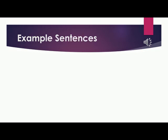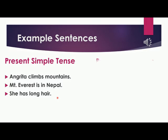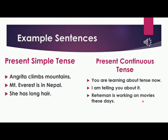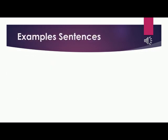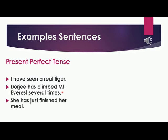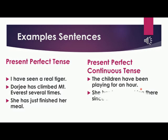We just learnt the names of all the tenses. Now, let's go to example sentences. Present simple tense: Angrita climbs mountain. Mount Everest is in Nepal. She has long hair. Present continuous tense: You are learning about tense now. I am telling you about it. Rahman is working on movies these days. Present perfect tense: I have seen a real tiger. Dorji has climbed Mount Everest several times. Present perfect continuous tense: The children have been playing for an hour. She has been working there since 2020.